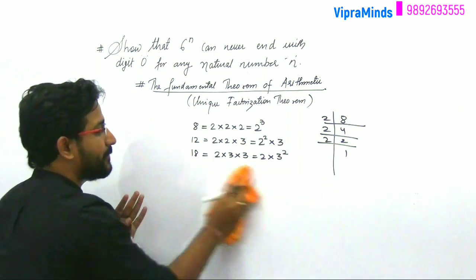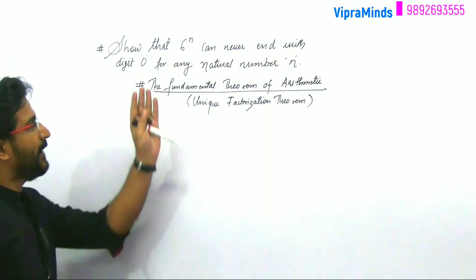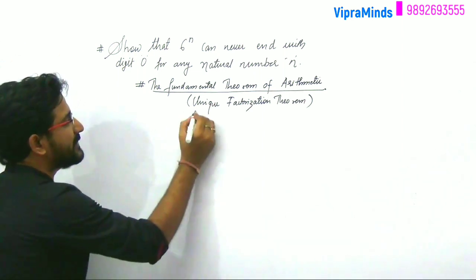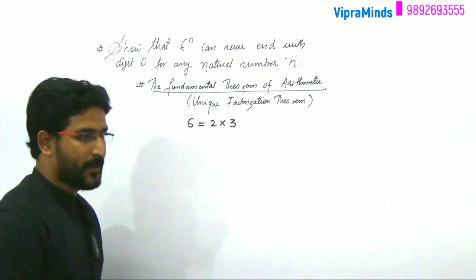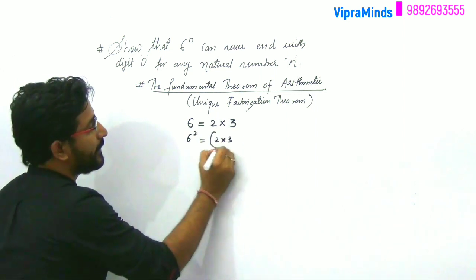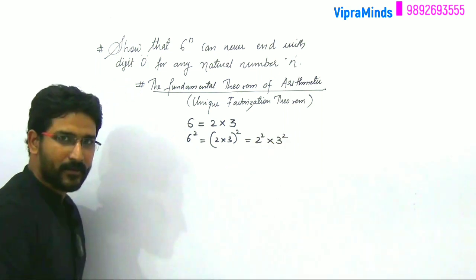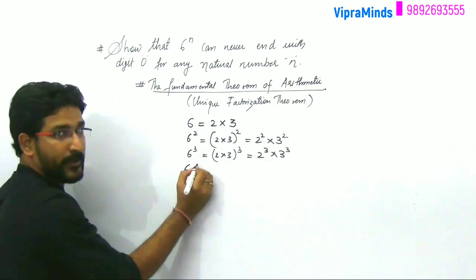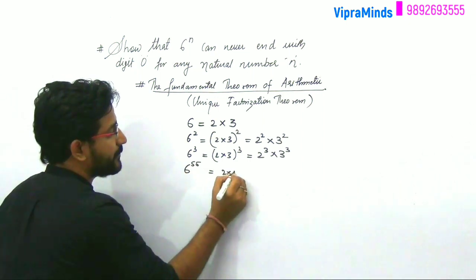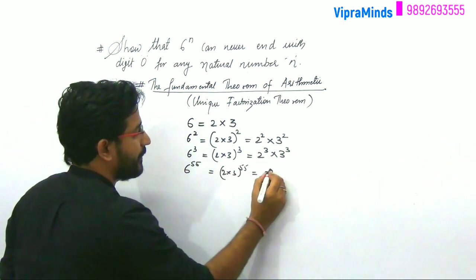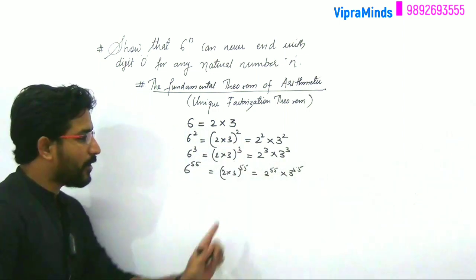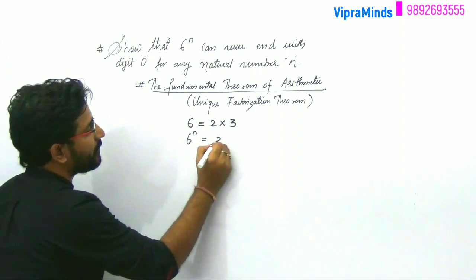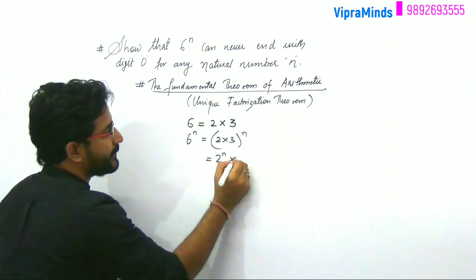Hope you have understood what this theorem means. Similarly, as given here, 6 raised to n — first let's talk about 6. The factor of 6 is 2 into 3. If we take 6 squared, it becomes (2 into 3) whole squared, that is 2 squared into 3 squared. If we take 6 cubed, it becomes 2 into 3 raised to 3, so 2 raised to 3 into 3 raised to 3. Even 6 raised to 55 gives 2 raised to 55 into 3 raised to 55.